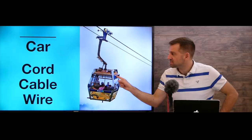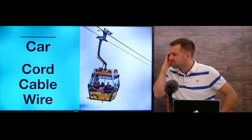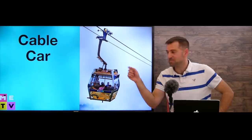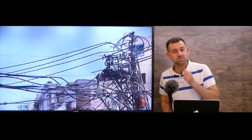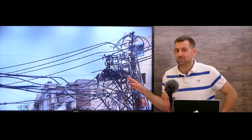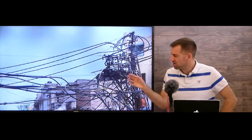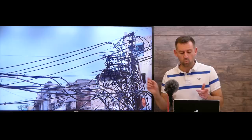This is called a — what — a cord car, a cable car, or a wire car? What do you think? The answer is it's called a cable car. You could call these things holding it up cables — it's a cable car. Now look at this picture. Which word comes to mind when you see these things here? Are these cords, cables, or wires? For me, the first word is wires. Look at all these wires. Wires is the correct answer. It would be weird to say 'look at those cables' or 'look at those cords.' These are wires.